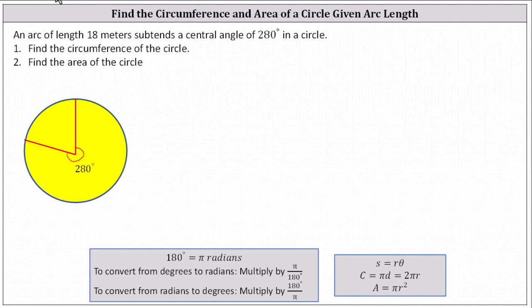An arc of length 18 meters subtends a central angle of 280 degrees in a circle as pictured below. The arc length of 18 meters is this length here. We're asked to find the circumference of the circle as well as the area of the circle.